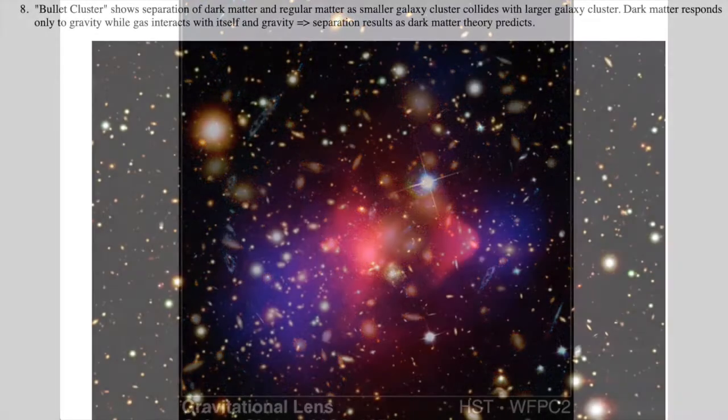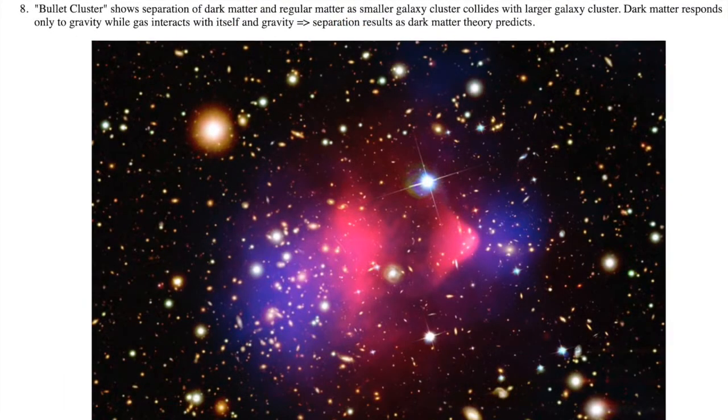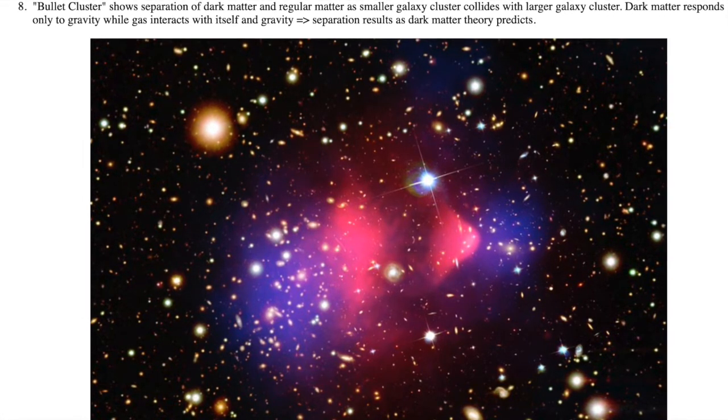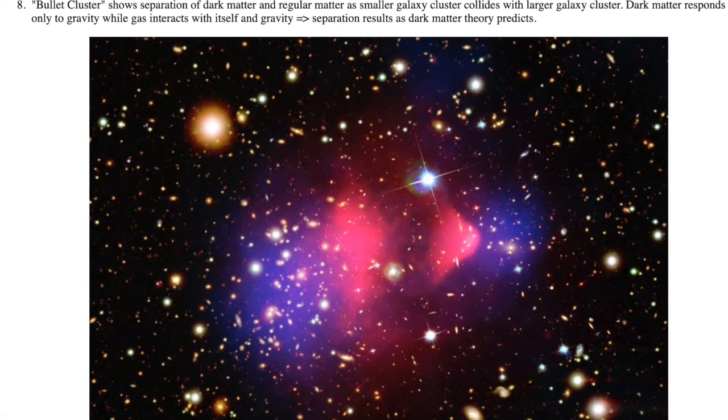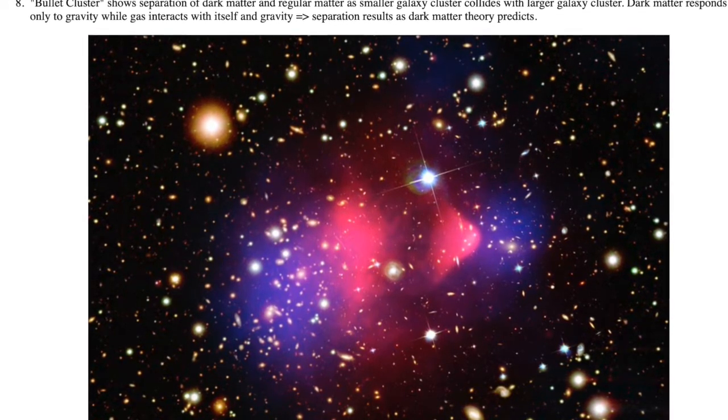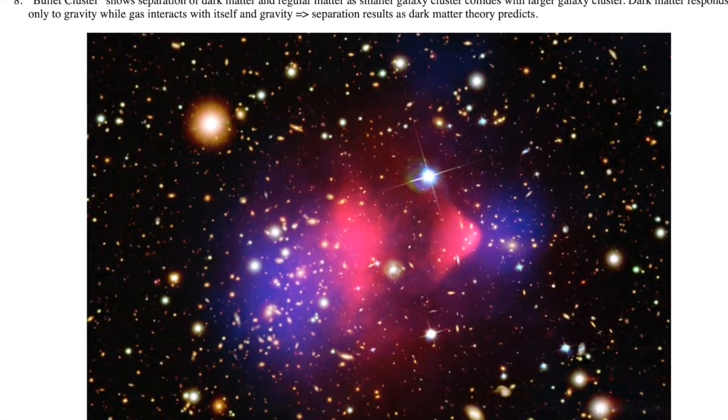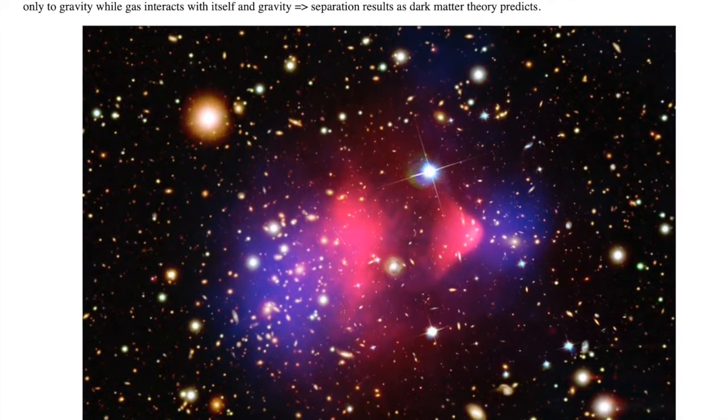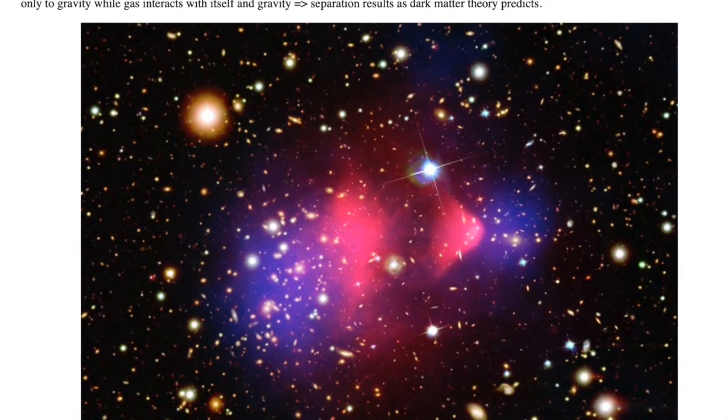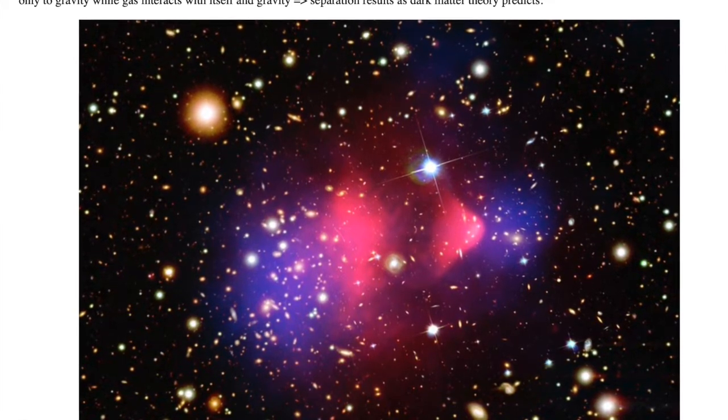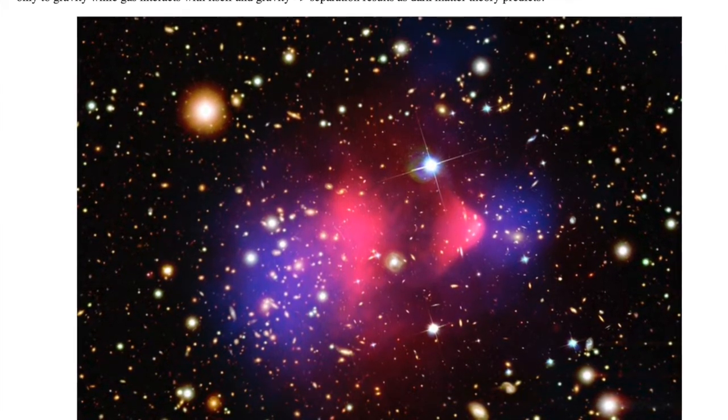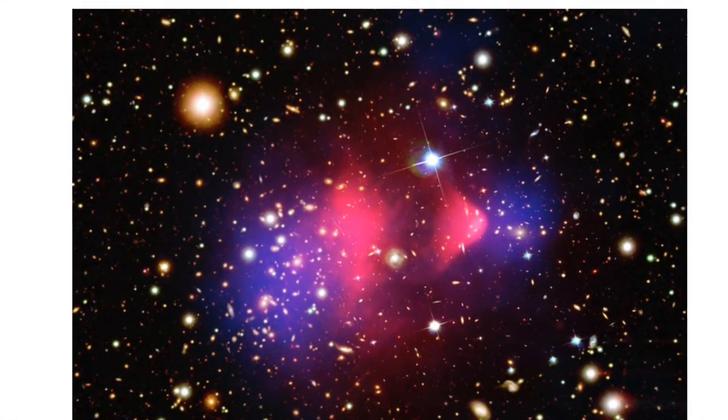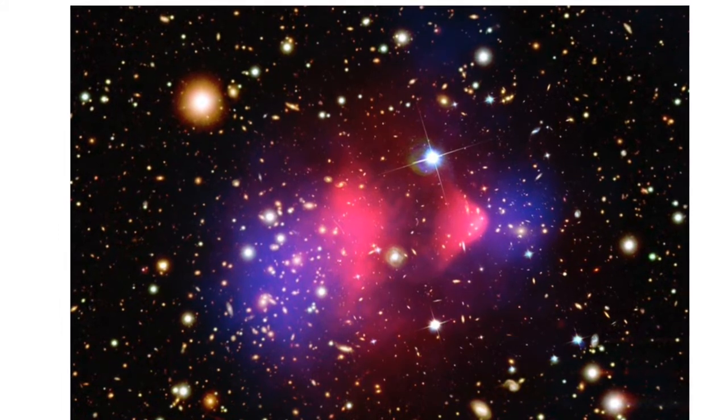The collision of the galaxy cluster 1E0657-56, called the bullet cluster, with another galaxy cluster has produced a clear separation of the ordinary matter from the dark matter. The ordinary matter of one cluster is slowed by a drag force as it interacts with the gas, ordinary matter, of the other cluster. The dark matter is not slowed by the impact because it responds only to gravity and is not affected by gas pressure.